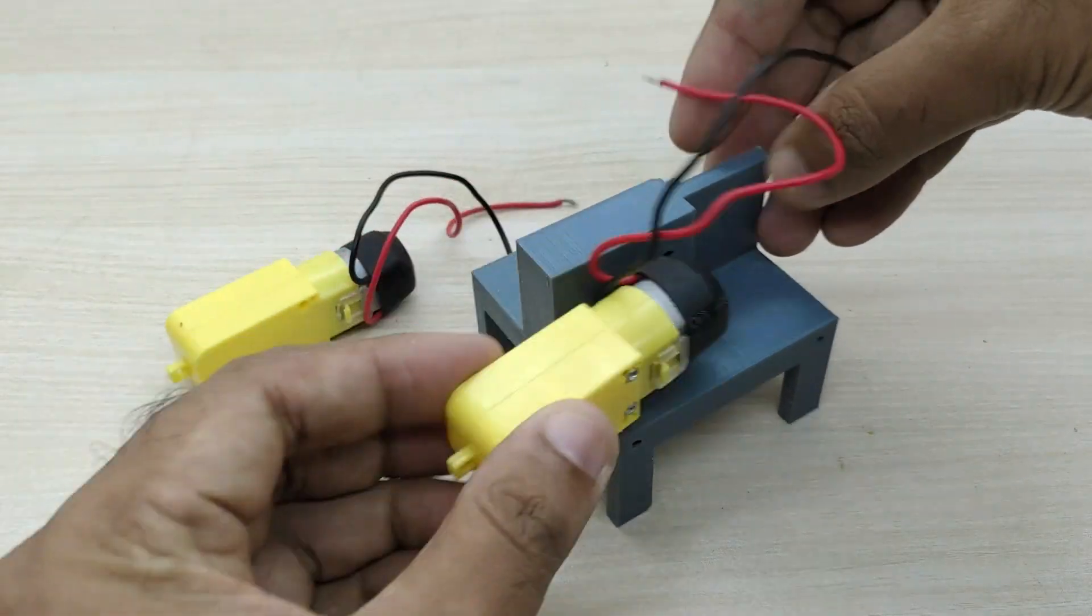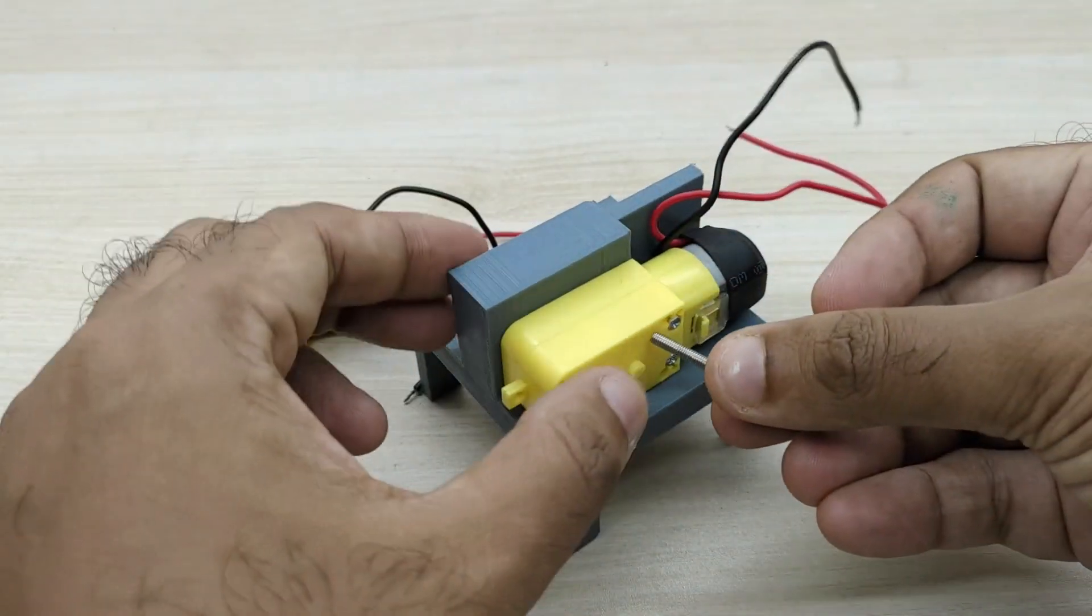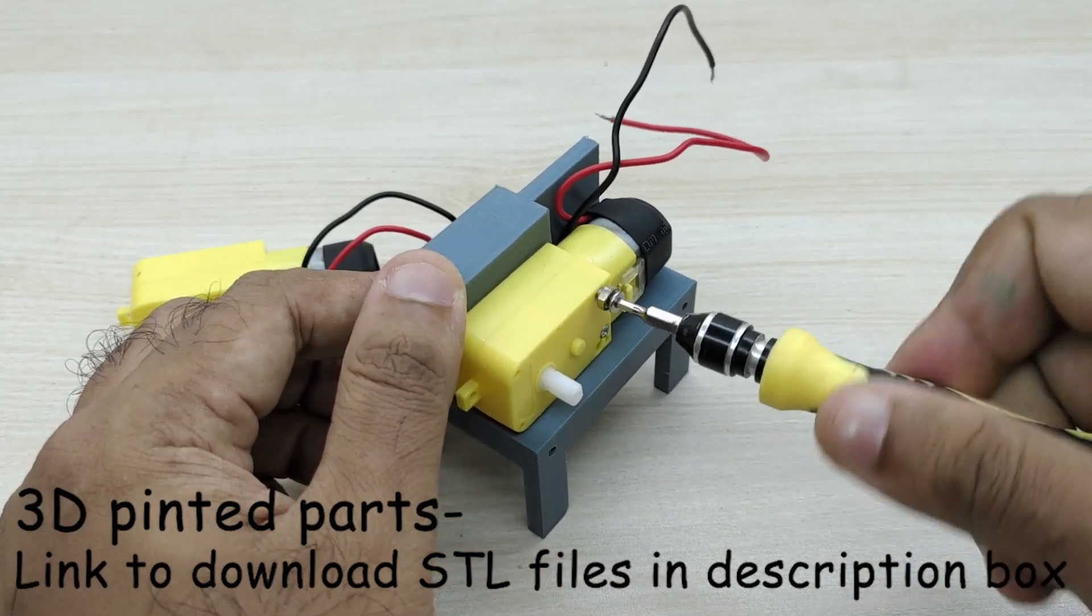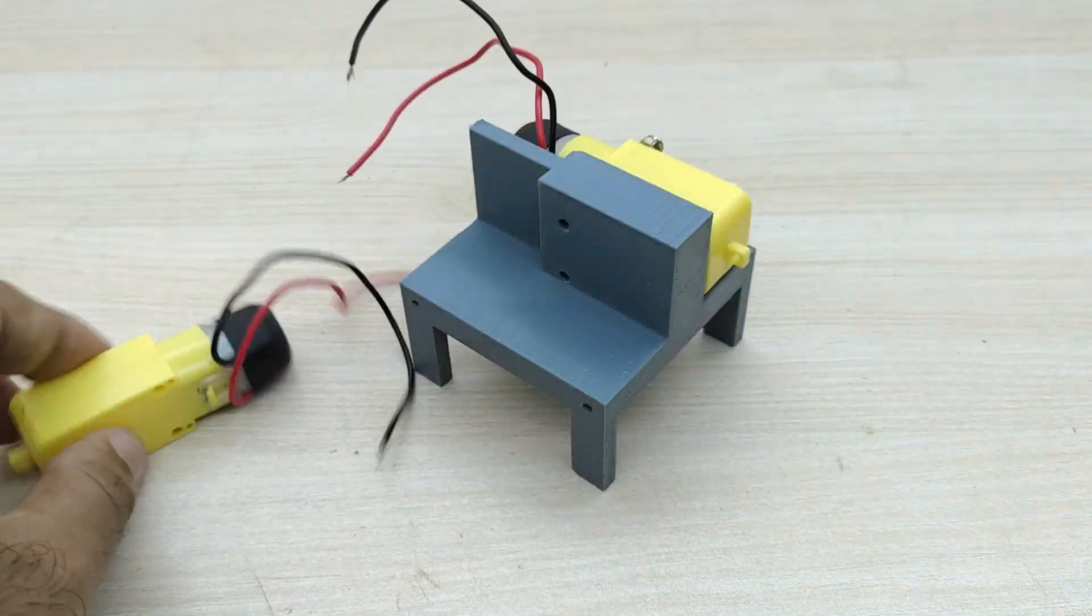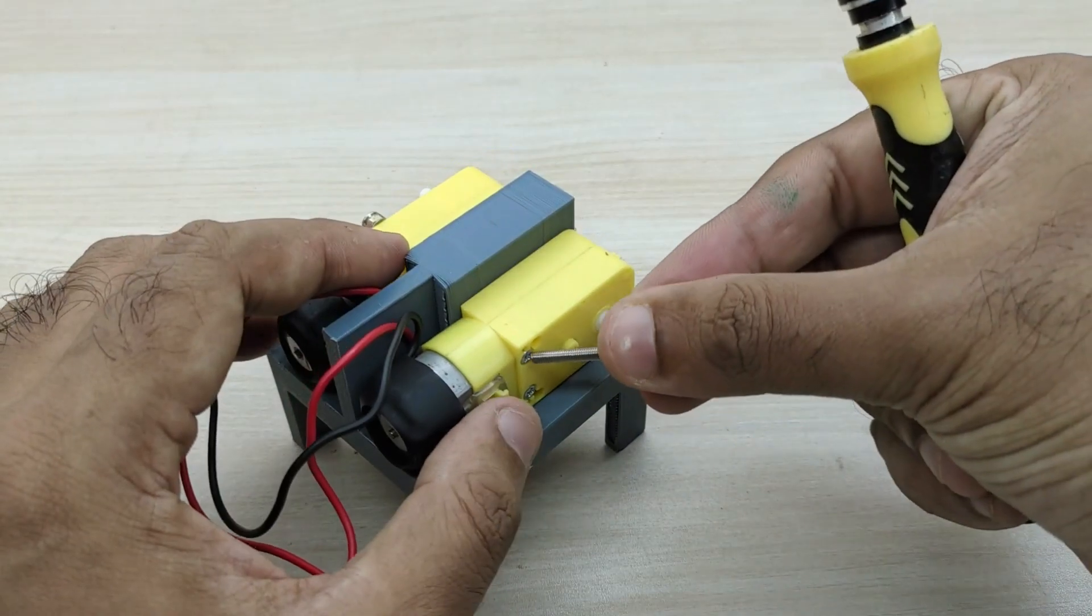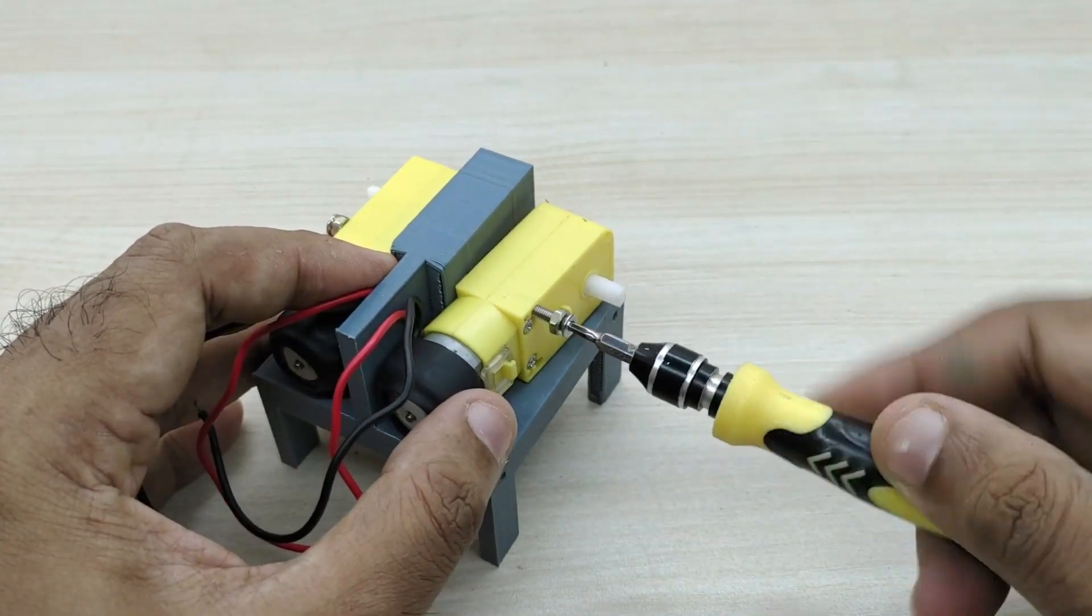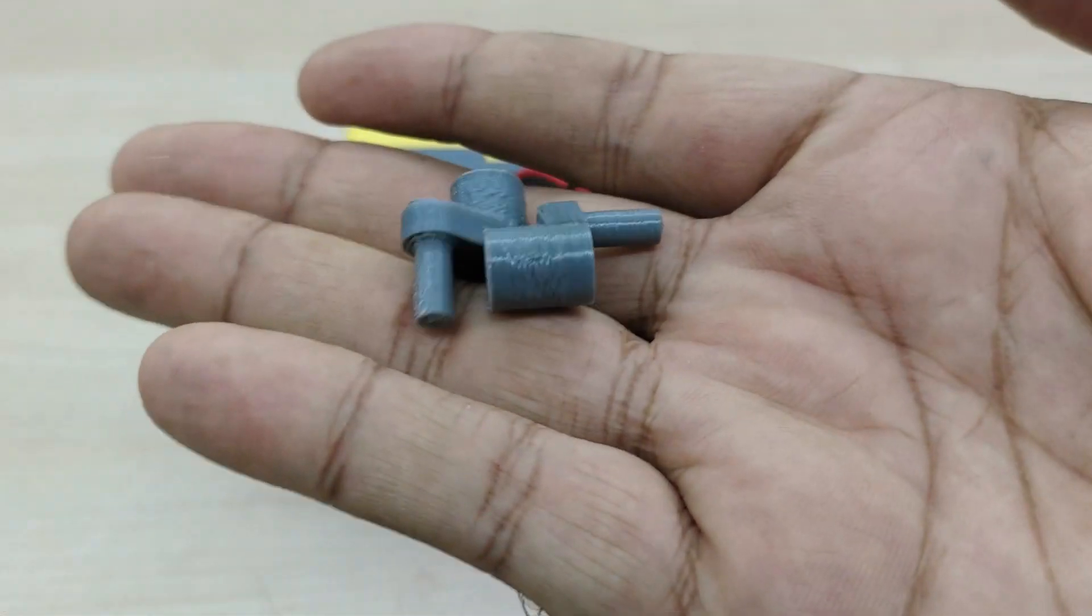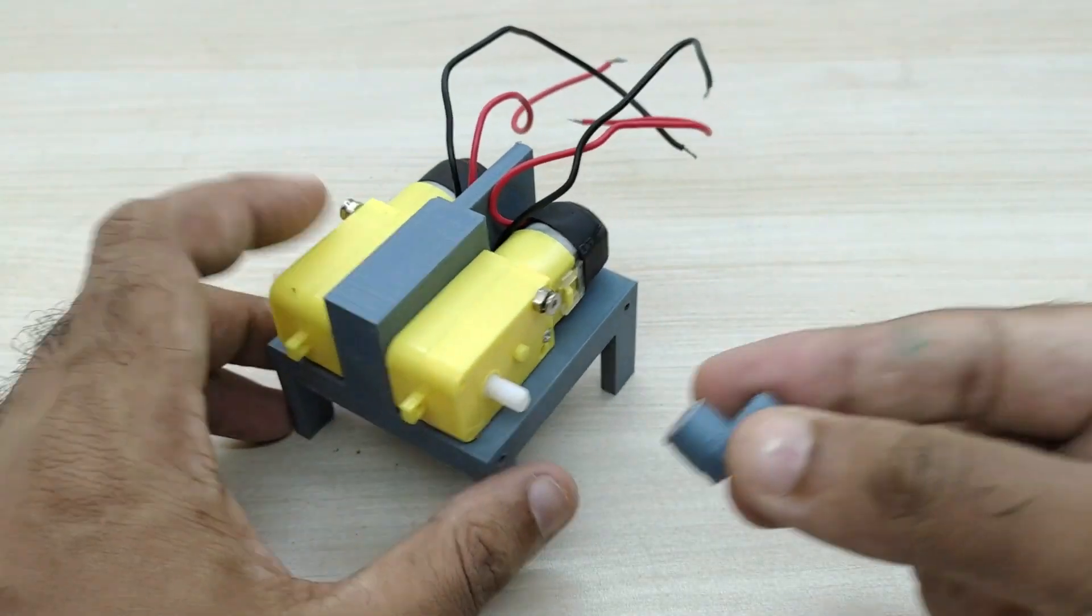First, both the motors have to be screwed to the inner frame with legs. Connect the 3D printed legs to both the motors.